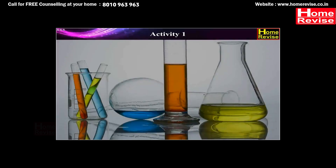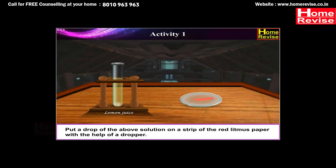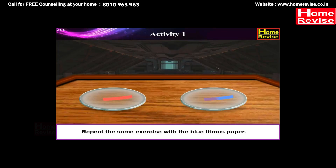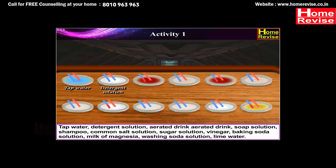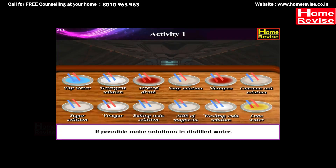Activity 1: Mix some water with lemon juice in a test tube. Put a drop of the above solution on a strip of red litmus paper with the help of a dropper. Is there any change in color? Repeat the same exercise with blue litmus paper and note down any change in color. Perform the same activity with the following substances: tap water, detergent solution, aerated drink, soap solution, shampoo, common salt solution, sugar solution, vinegar, baking soda solution, milk of magnesia, washing soda solution, and lime water. If possible, make solutions in distilled water.